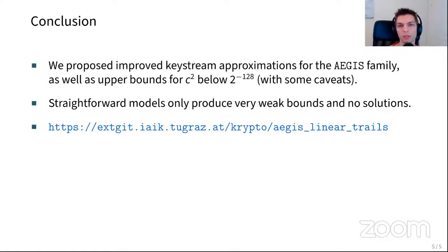In conclusion, we propose improved keystream approximations for all members of the Aegis family and show upper bounds for squared correlation contribution below 2^{-128}. Straightforward models only produce weak bounds and provide no solutions. We invite everyone to read the paper and look at the linked code. Thank you.